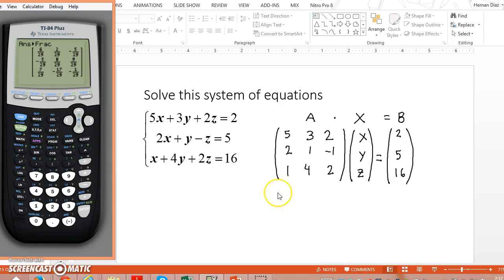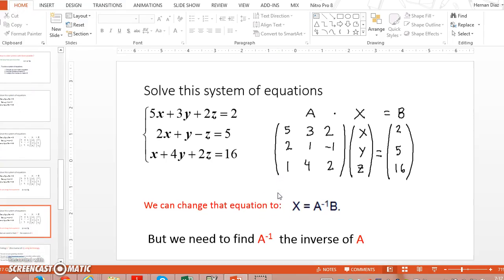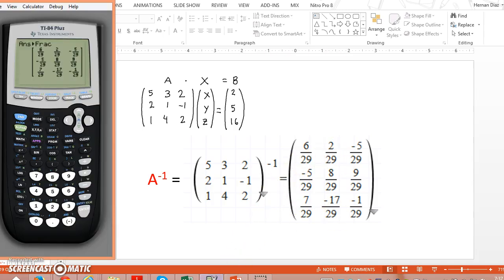And so, if you go to my next page right here, it's what I have, right? This is the matrix we got using the website. You see, it's the same one, 6 over 29, 2 over 29. So, that's the inverse matrix.